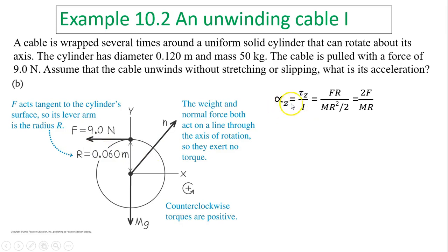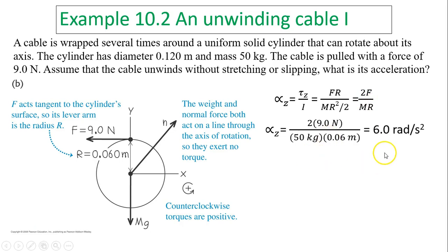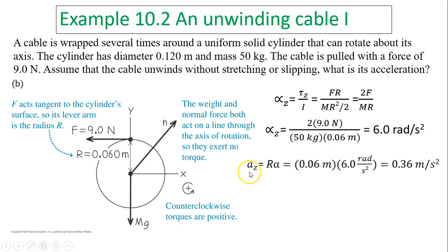So alpha_z equals torque divided by I. Torque equals F times R, and I is mR²/2. This is because the force is tangent to the circle, so the lever arm is R. That gives you 2F over M times R. Substituting all the numbers, alpha_z equals 6 radians per second squared. And a equals R times alpha, which gives 0.36 meters per second squared.